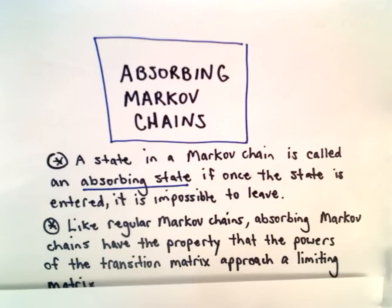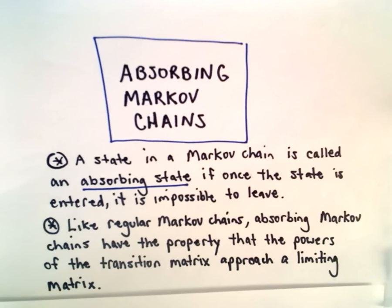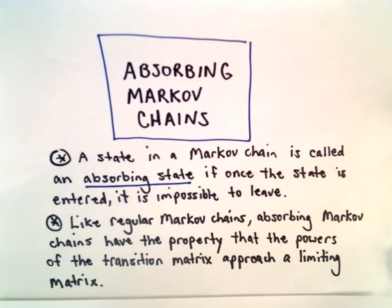Similar to regular Markov chains, an absorbing Markov chain — which we'll define at the end — has the property that the powers of the transition matrix approach a limiting matrix. So a regular Markov chain and an absorbing Markov chain share that property.